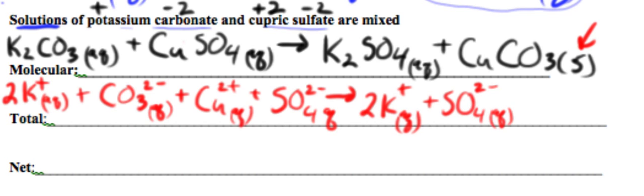So far, nothing has changed on the left or right, but then when we get to copper 2 carbonate, we're going to write it as the precipitate. We keep it together. We don't separate it because it's a solid.